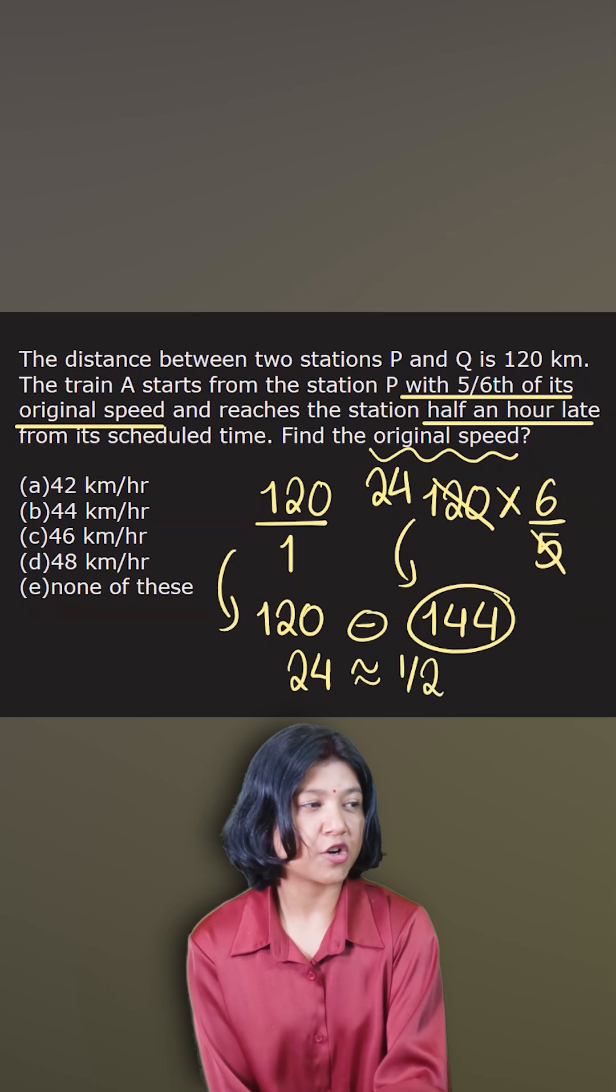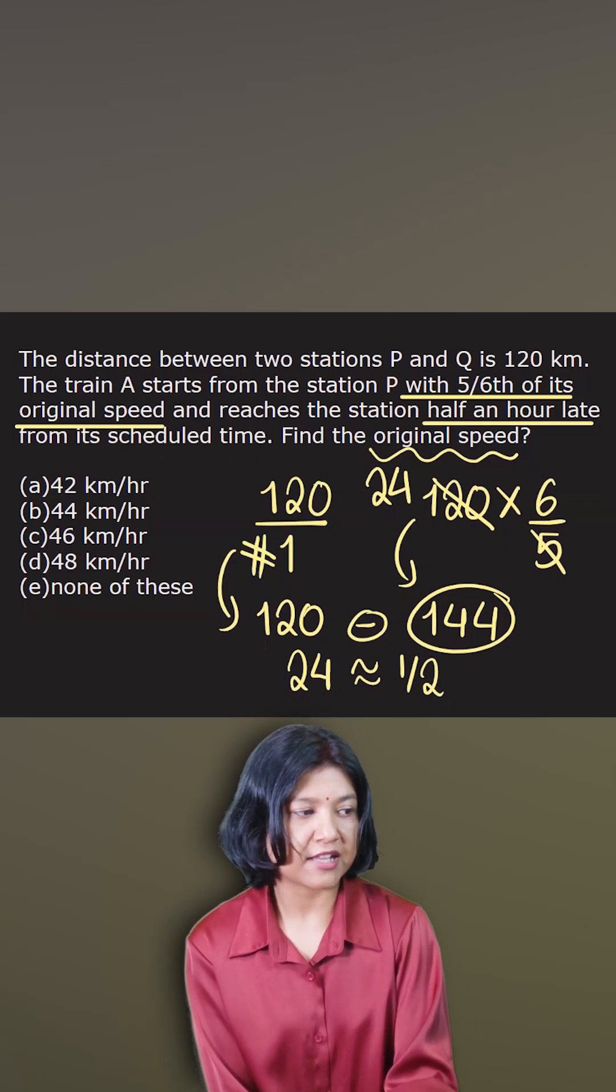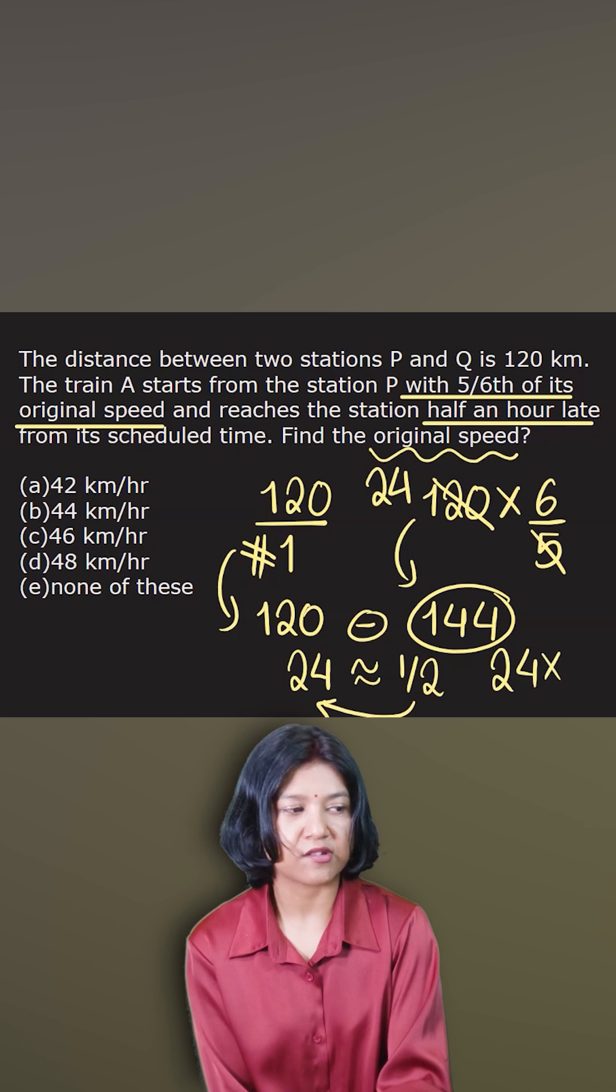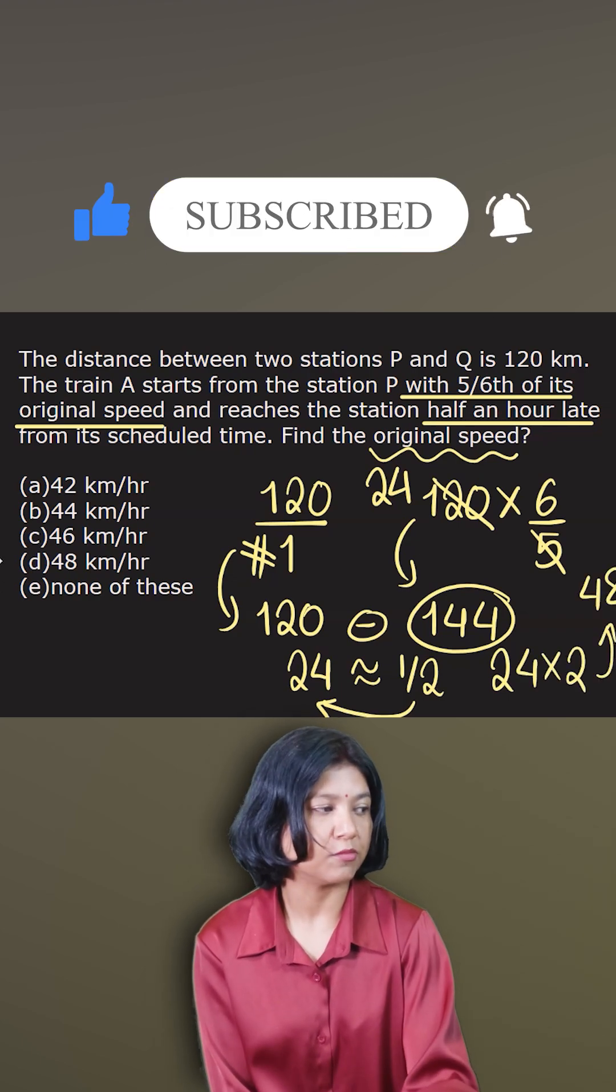So we want to find the original speed, and note that I took original speed as one unit. So to find one unit here, I'll just cross multiply and I get 24 times 2. The answer is 48. So hence, the original speed has to be 48 kilometer per hour.